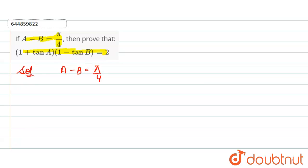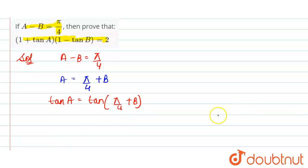And we can write it as A is equal to π by 4 plus B. Now when we multiply both side by tan, then we get tan A is equal to tan of π by 4 plus B.